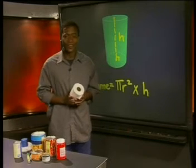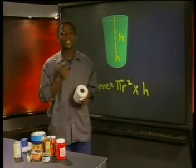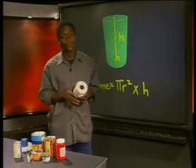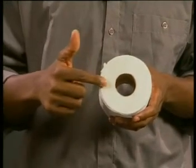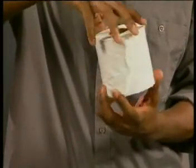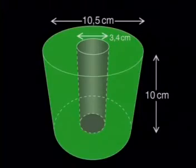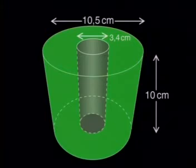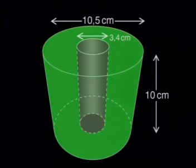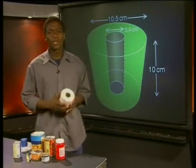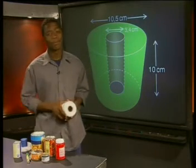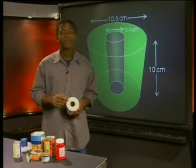Have you ever wondered how much toilet paper there is on a toilet roll? Let's see if we can use the formula for the volume of a cylinder to calculate the volume of toilet paper on a toilet roll. Through the middle of the roll there is a cardboard cylindrical part that is hollow, and the rest of the roll is made up of paper that is tightly wrapped around it. We have measured the toilet roll and found that the diameter of the whole roll is 10,5 cm, the diameter of the hollow inside is 3,4 cm, and the height of the roll is 10 cm. We can subtract the volume of the hole from the volume of the whole toilet roll.